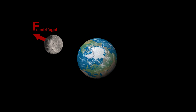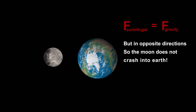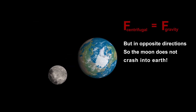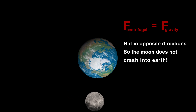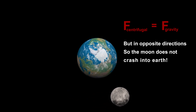so it too has an outward centrifugal force. And as we saw earlier, it has gravity pulling it towards the Earth. These two forces cancel each other out, so the Moon has a stable orbit.